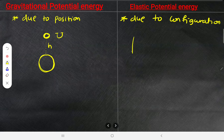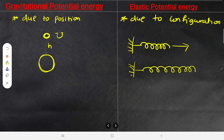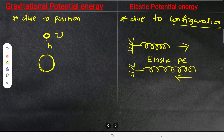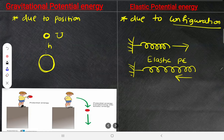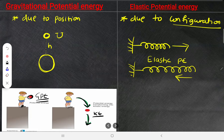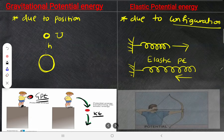If a spring is stretched and you release it, it bounces back — the energy it gained is due to elasticity, hence elastic potential energy. For example, a boy standing at a height holds a ball — the ball has gravitational PE due to its position. When he releases it, PE converts to kinetic energy.